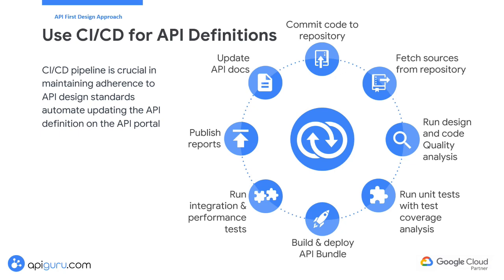With the CI/CD pipeline, updates to the API can be automatically tested, validated, and deployed. When changes are made to the API or its documentation, the pipeline triggers a series of automated steps including building, testing, and deploying these updates. This ensures that the latest version of the API definition is consistently and promptly reflected on the API portal. As developer feedback is collected and updates to the API are required, a CI/CD pipeline allows for rapid iteration by automating the integration of these changes into the development and deployment process.